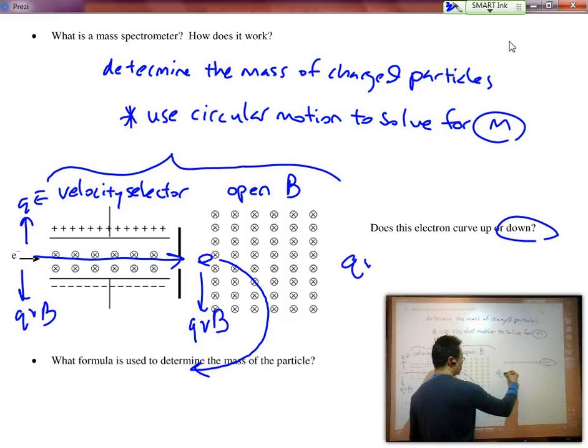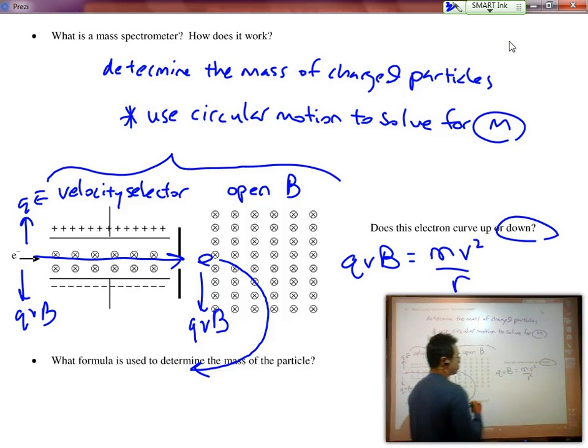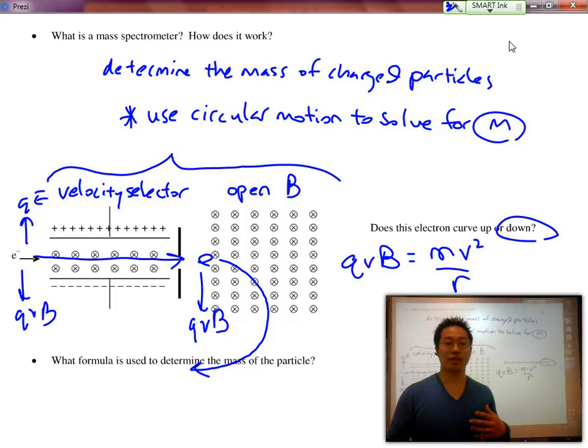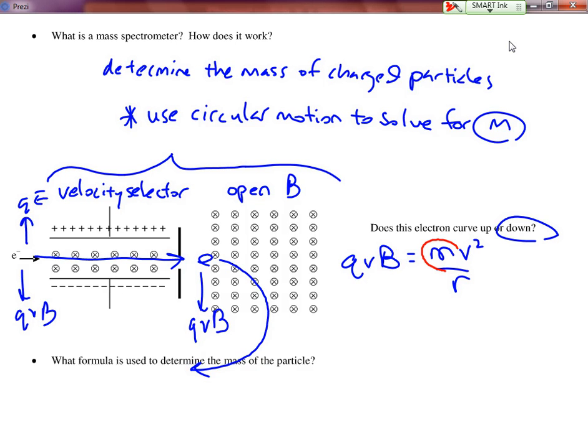So over here, the electron curves down. I know that QVB will equal to MV squared over R. So if I want to solve for the mass of the particle, the V's will cross out, and I end up with mass is equal to QBR over V.